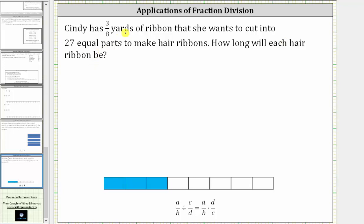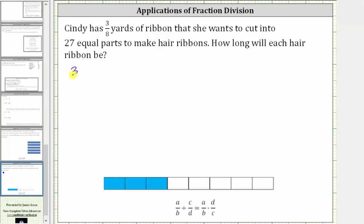Because she wants to cut the 3/8 yards into 27 equal parts or pieces, to determine how long each hair ribbon will be, we need to divide 3/8 by 27, which gives us 3/8 divided by 27.